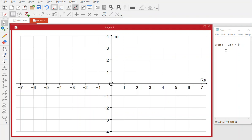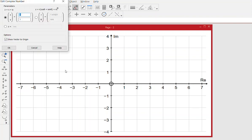This is plotting the locus of argument of z minus z1 equals theta. So if we start off by putting in a complex number at the origin, so zero,